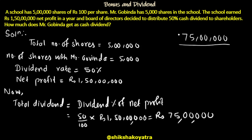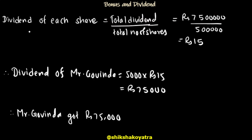So from the 5,000 shares that Mr. Govinda has, we calculate the dividend. Total dividend divided by total number of shares. So 45 lakh divided by 5 lakh gives 15 rupees per share.